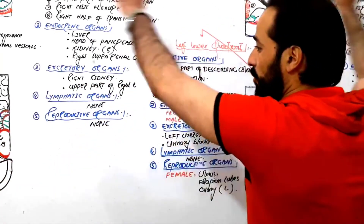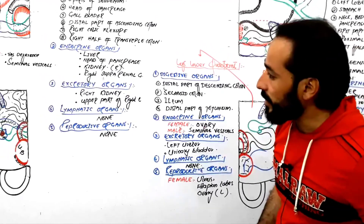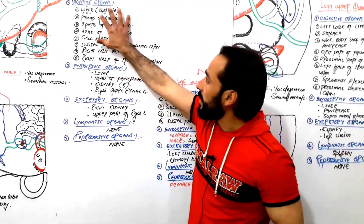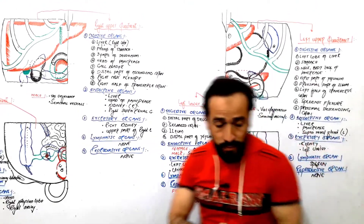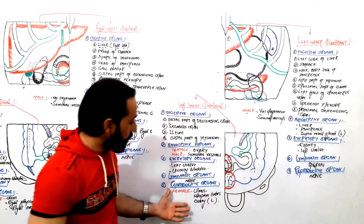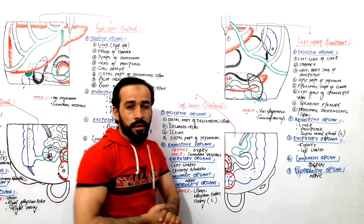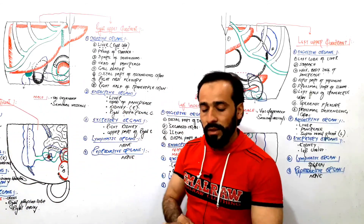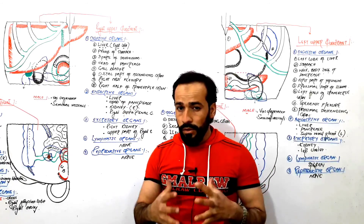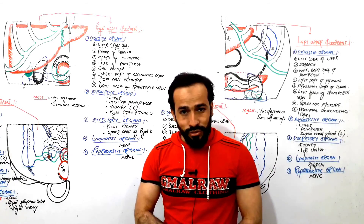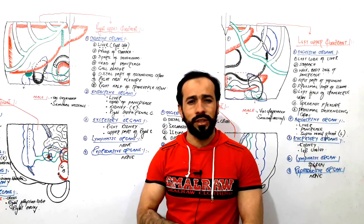With this we are finished with all the abdominal quadrants — the right upper quadrant, right lower quadrant, left upper quadrant, and left lower quadrant — and the organs found in each. Before that we also recorded about the organs found in the abdominal regions. See you in the next lectures to find out what we are going to cover next.